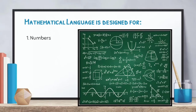Mathematical language is designed for: number one, numbers. We are already familiar with number symbols — we know what number one looks like, number eleven, number five. Next would be sets. A set is a collection of anything. Numbers also have their own sets: the set of natural numbers, the set of whole numbers, the set of integers, and so on.